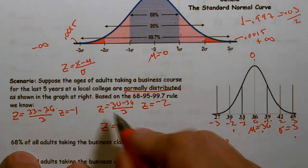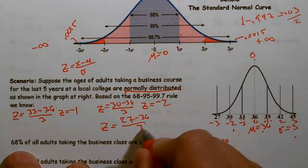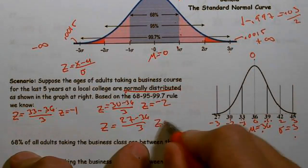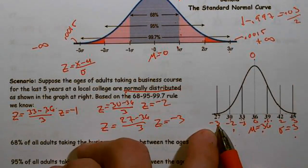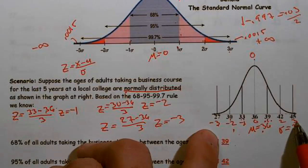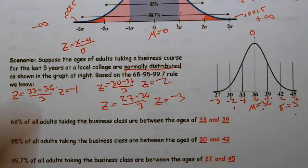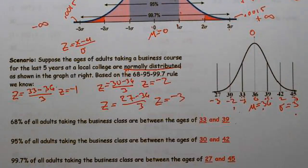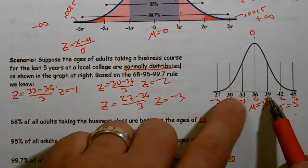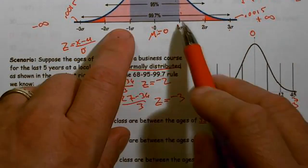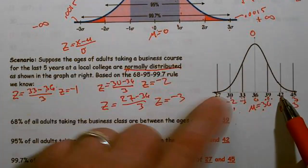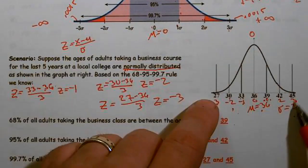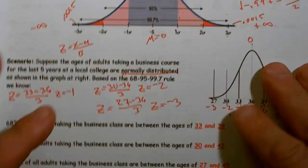Continuing: z equals 27 minus 36 over 3 gives negative 9 over 3, which equals negative three standard deviations. And 45 is three standard deviations above. That's how we use z-score scaling to the standard normal — all normal curves work this way. So between 33 and 39 is 68% (plus or minus one), between 30 and 42 is 95% (plus or minus two), and between 27 and 45 is 99.7% (plus or minus three).